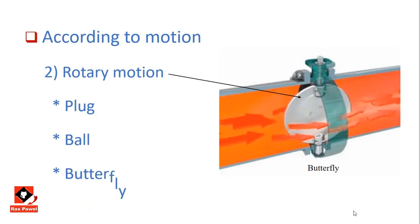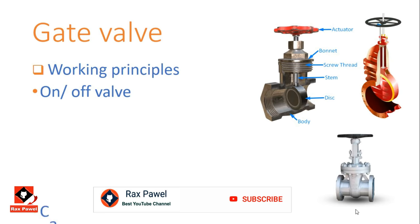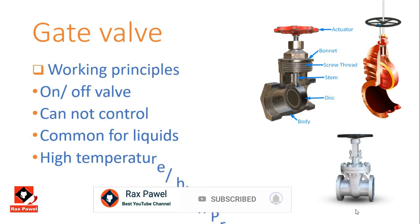Gate valve working principles: it applies only for on/off applications, moved by a stem perpendicular to the direction of flow, and it cannot regulate or control the flow. It is commonly used for liquids and is suitable for high temperature and high pressure applications.